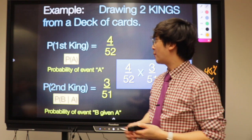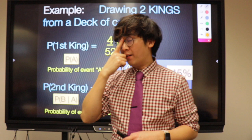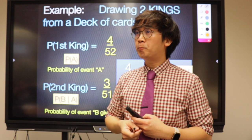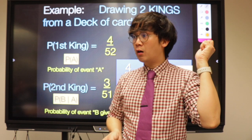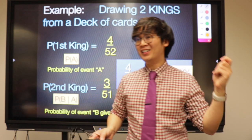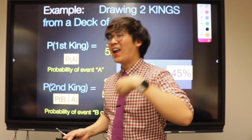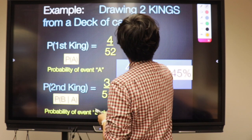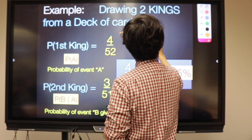Here's another example: what's the probability that when you pick three cards, it's going to be a number card, a face card, and an ace? There are nine number cards: 2, 3, 4, 5, 6, 7, 8, 9, 10. Give your answer in both fraction form and decimal form.